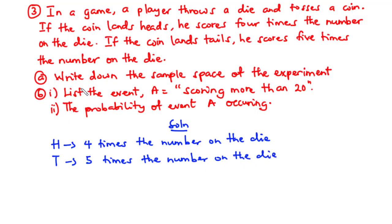So for part A, we are going to write down the sample space of the experiment. In writing down the sample space, we are going to construct a table on the possible outcomes of tossing a coin against the possible outcomes of throwing a die.